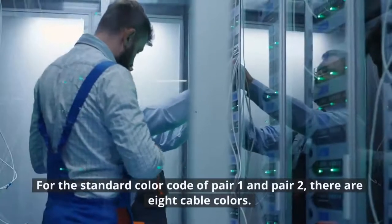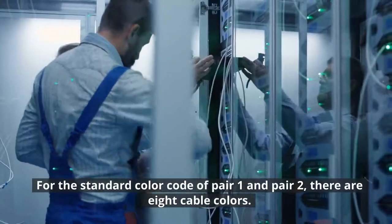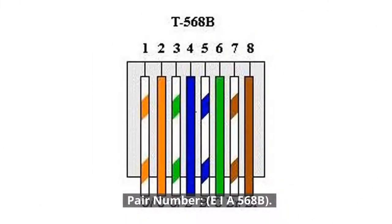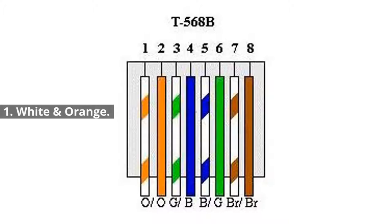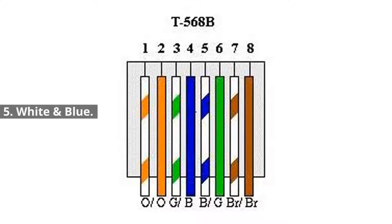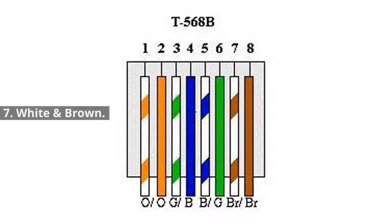For the standard color code, there are eight cable colors using the EIA/TIA 568B standard. Pair 1: White and Orange. Pair 2: Solid Orange. Pair 3: White and Green. Pair 4: Solid Blue. Pair 5: White and Blue. Pair 6: Solid Green. Pair 7: White and Brown. Pair 8: Solid Brown.